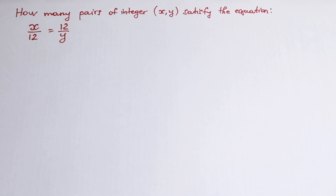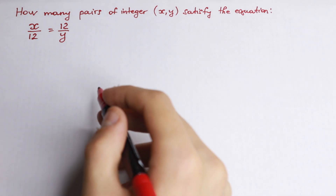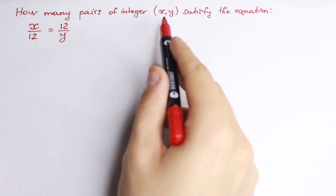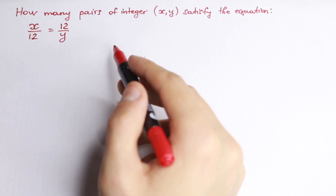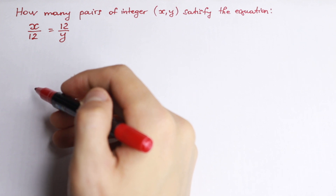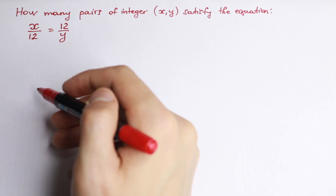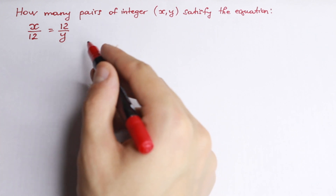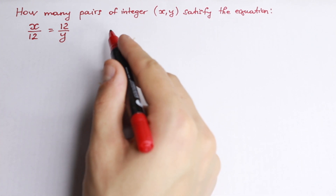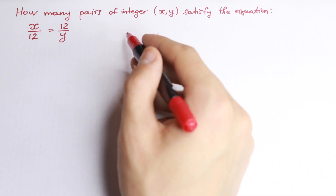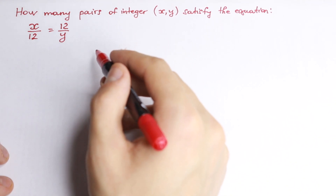Hello everyone, happy to see you here. This is a really great and tricky Olympiad problem: how many pairs of integers x and y satisfy the equation? We have x over 12 equal to 12 over y. This is really interesting because if you're talking about real numbers it's hard to count all solutions, but we have integers, so this is really great.